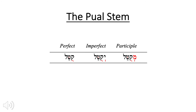The Pual is often stereotypically referred to as the intensive passive. There are only three forms: perfect, imperfect, and participle. As typical of the participle, we have the mem prefix again with the shva. However, instead of a patach under the first root letter, we have a U-class vowel, because this is the Pual. In the imperfect we also have the shva and again a U-class vowel. And in the perfect we also have the U-class vowel — with all three having a dagesh in the second root letter.